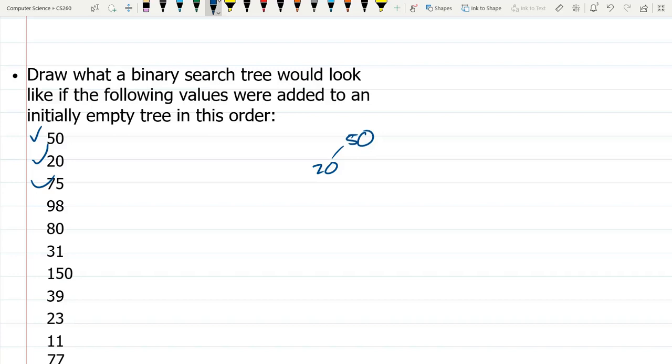So 75. Where's that going to go? Bigger than 50, so it goes right there. 98. Bigger than 50, bigger than 75. 98.